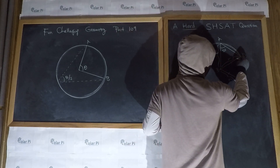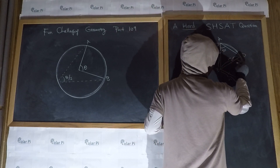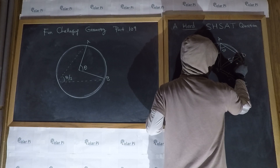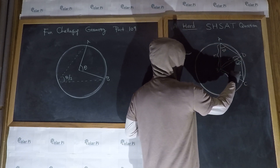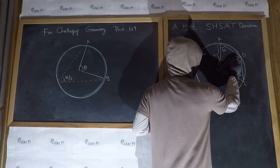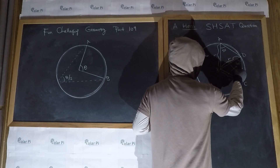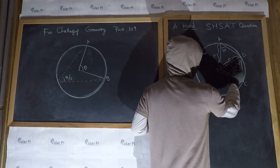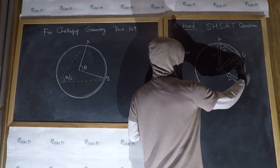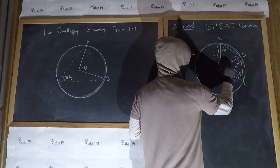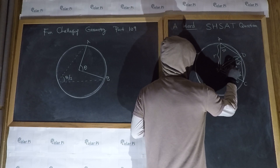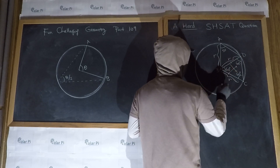So that means that this angle right here has got to be 60. Because this side is equal to this side, the angles across from them have to also be equal. 120 degrees occupied there means that this angle right here is 60.